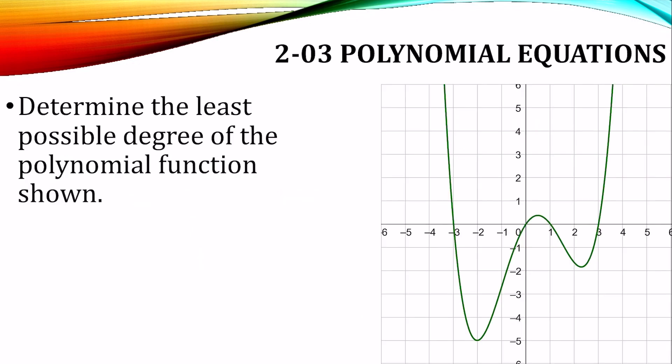What is the least possible degree of the function shown? Well, we can use x-intercepts and turning points. So there's 1, 2, 3, 4 x-intercepts. So those are four zeros. Notice on each of them, the graph is passing through the x-axis to the other side. So remember, if it comes down and touches and goes back, there's 2 there. But we don't have that case. They're all passing through. So we have 4 zeros.